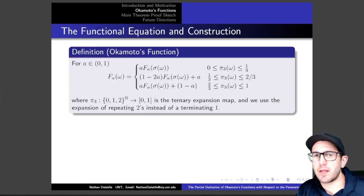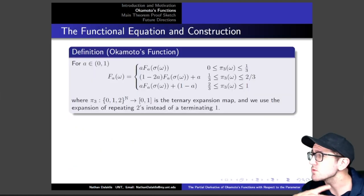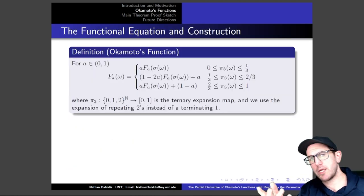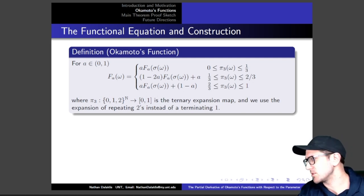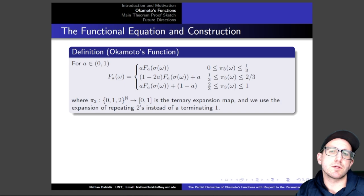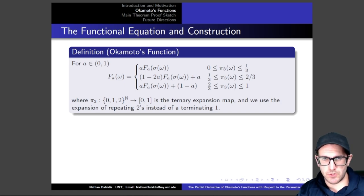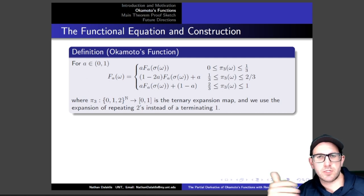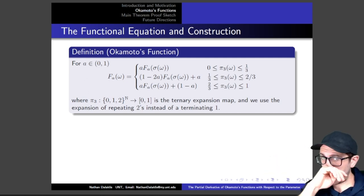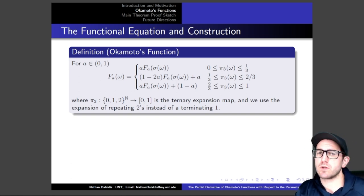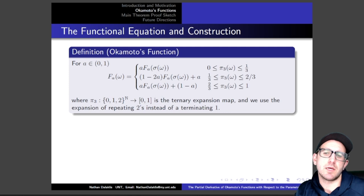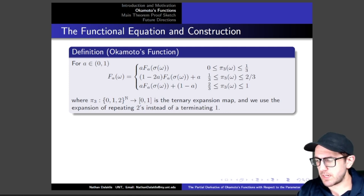That's what we did. I'm going to use the functional equation definition instead of what Okamoto originally used as his definition in 2005. For a particular value of A between 0 and 1, not inclusive, Okamoto's function satisfies a functional equation where we're now working with the ternary expansion map, and instead of repeating 1s, we use repeating 2s instead of a terminating 1.